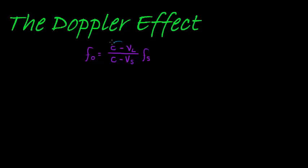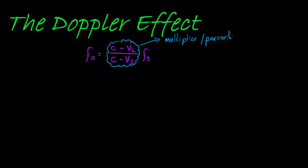This part will act as a multiplier — or maybe a better word is a percentage. It will tell me what percent of the frequency emitted I am hearing. If I'm hearing more, it would be more than 100%, so one-point-something. If I'm hearing it at a lower frequency, it would be less than one, zero-point-something.